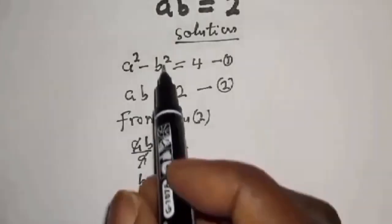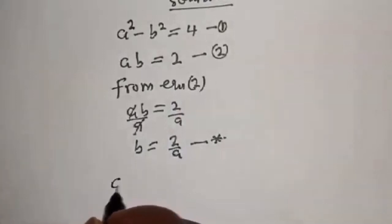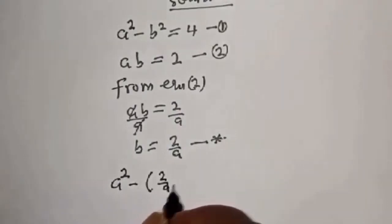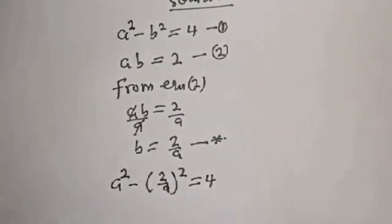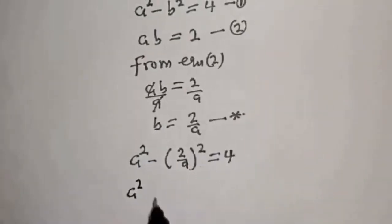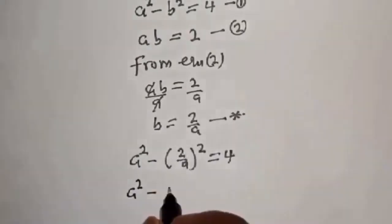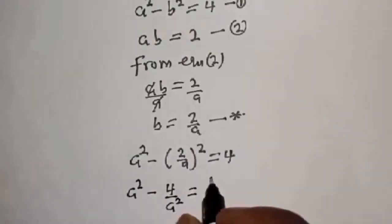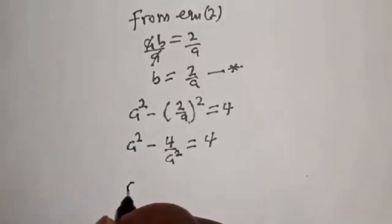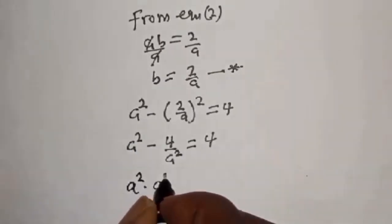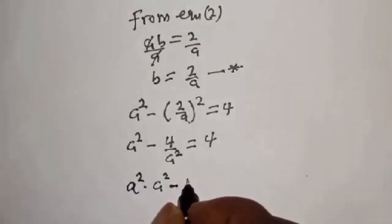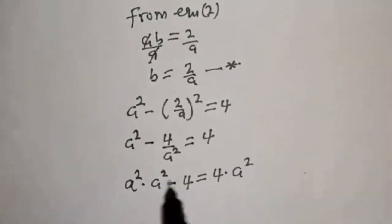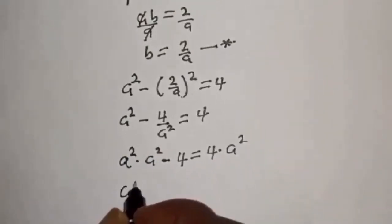Now let's substitute for b in equation 1. That is, a squared minus (2/a) squared equals 4, which gives a squared minus 4 over a squared equals 4. Multiplying all through by a squared, we get a squared times a squared minus 4 equals 4a squared.